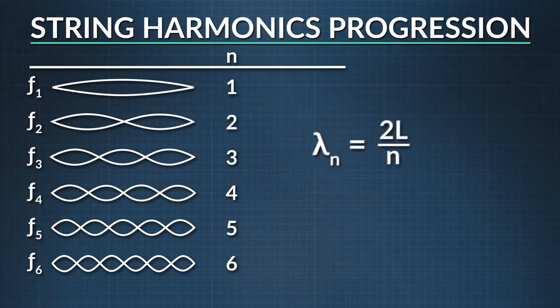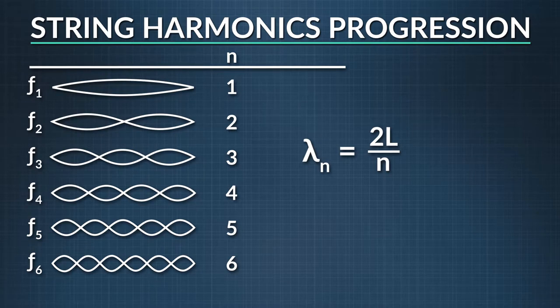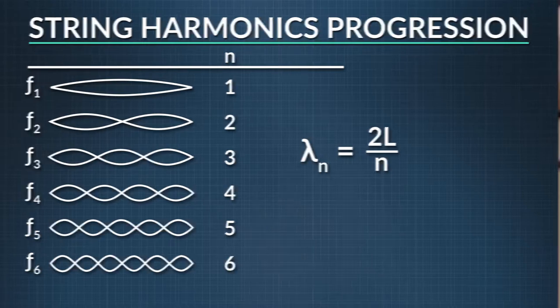This pattern continues with each higher harmonic, where the wavelength is equal to half of the length of the string times n, which is the harmonic number above the fundamental.